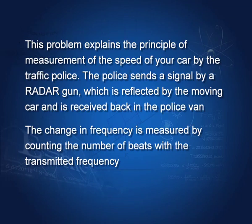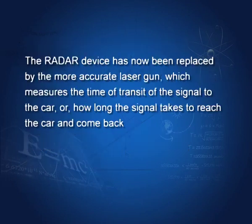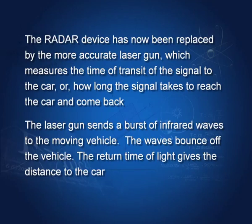The radar device has now been replaced by a more accurate laser gun. The laser gun sends a bunch of signals reflected by the car, and from the travel time of successive signals, the velocity of the car can be determined. This is a more modern and accurate device now used by police.